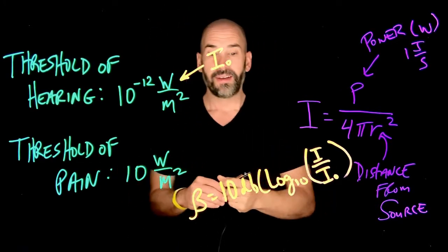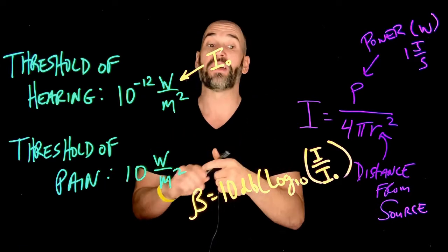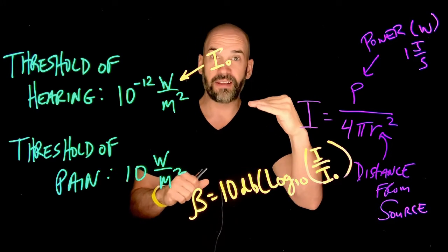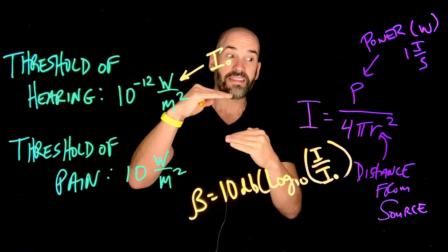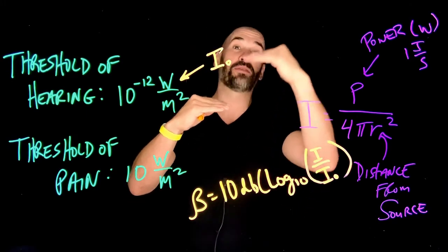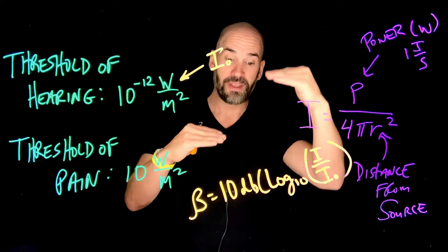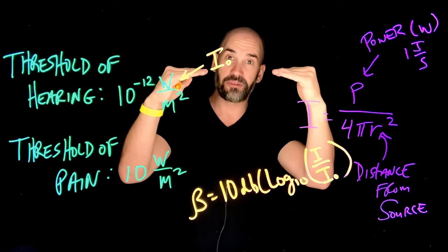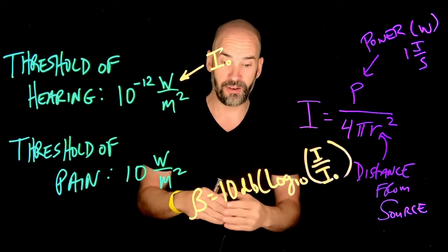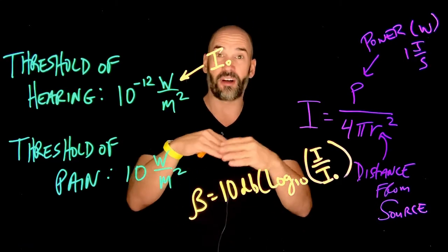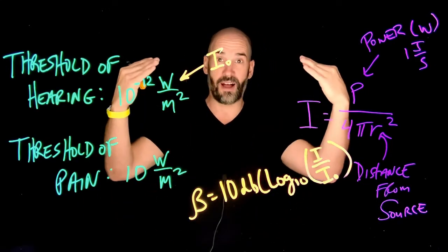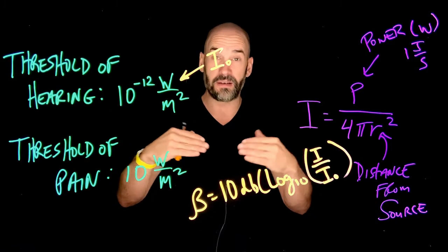This scale is interesting because it's a log scale. That means that going from 110 to 120 decibels is not just roughly 10% louder. Every time you jump 10 decibels, you're getting twice as loud — or at least the perceived loudness is twice as loud. So going from 110 to 120 decibels means you're actually jumping to twice the volume.